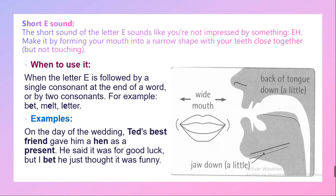Here you can hear the sound /ɛ/: 'bet', 'melt', 'letter'. Here is the position of the jaw, lips, and tongue. What you need to do is make the back of your tongue a little bit down, jaw a little bit down, and your mouth a bit wide — not really wide, just in the middle, like in the picture.